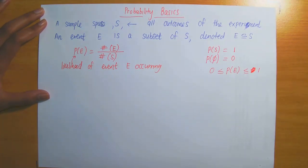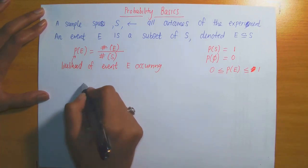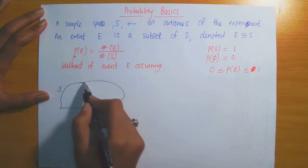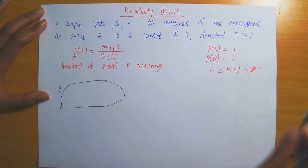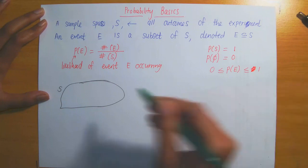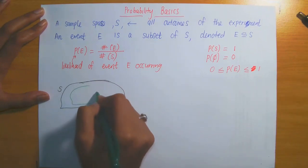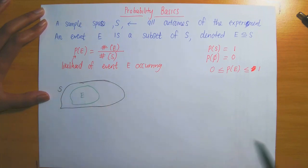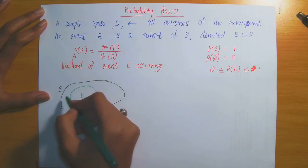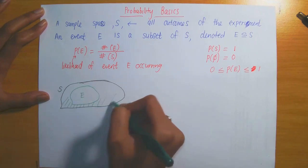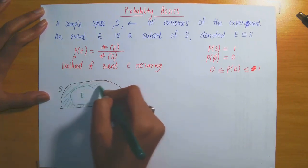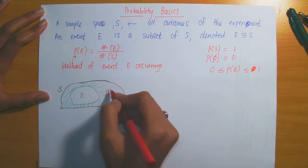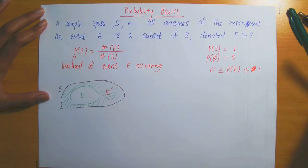Let me give you a picture of this. If I draw the sample space S — a set consisting of all possible outcomes — and E is a subset contained in S, let's say the green portion is set E. Then everything outside of E but still contained in S is considered to be E complement, denoted as E prime.